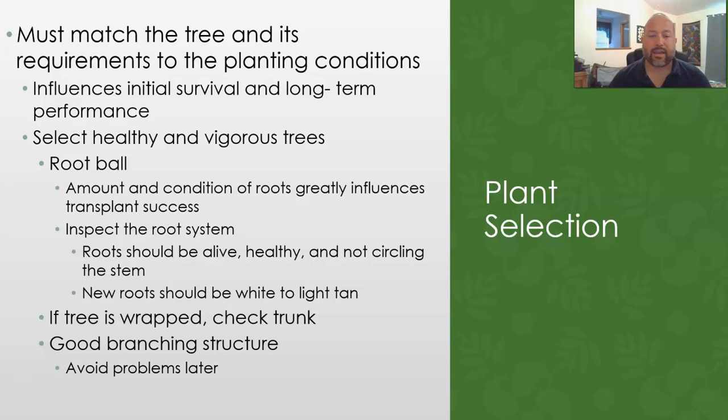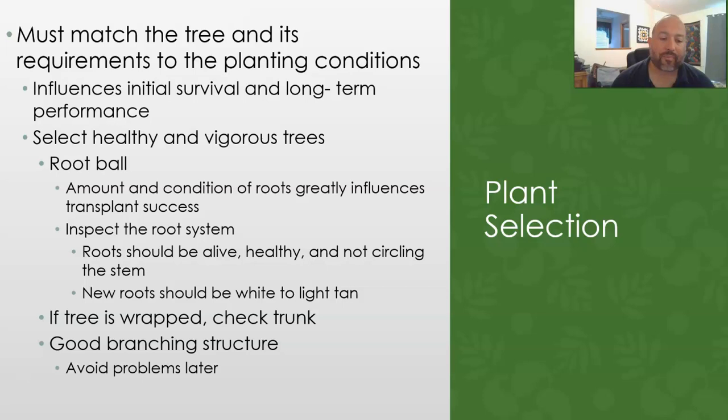You also want to look for a good branching structure to avoid problems later — specifically pruning problems or branches falling off. Make sure there's no existing damage, that branches extend laterally from the tree, and that there is one central leader, unless you're intentionally looking for a multi-leader tree with co-dominant stems.